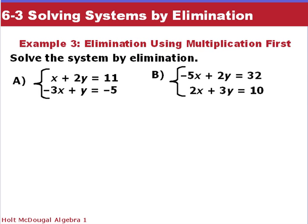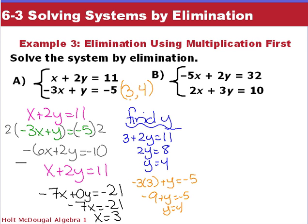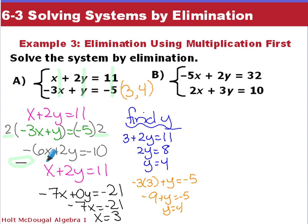Now we have two systems here. Looking at those, we do not have the same coefficient for either our x or our y terms, so we have to do some multiplication to get that. First of all, our x's are aligned, our y's are aligned, and our constants are aligned — step one is taken care of. But if we were to add or subtract the two equations, one variable would not be eliminated. So I kept the first equation the same: x plus 2y equals 11. For the second equation, I multiplied every term by 2 to eliminate the y, giving negative 6x plus 2y equals negative 10. Subtracting, negative 6x minus x is negative 7x, 2y minus 2y is 0y, and negative 10 minus 11 is negative 21. So negative 7x equals negative 21, or x equals 3.